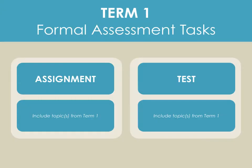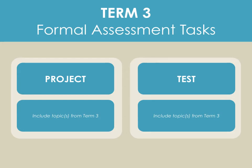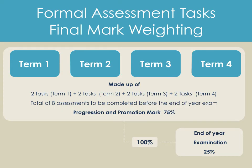In terms of formal assessment tasks: in term one there is an assignment and a test; in term two, again an assignment and a test; in term three, a project and a test; and in term four, an assignment and an investigation. All of these contribute to the final mark at the end of the year. Across all four terms, these eight assessments make up 75% of your promotion and progression mark, and the remaining 25% comes from the end-of-year exam, giving 100% for progression and promotion.